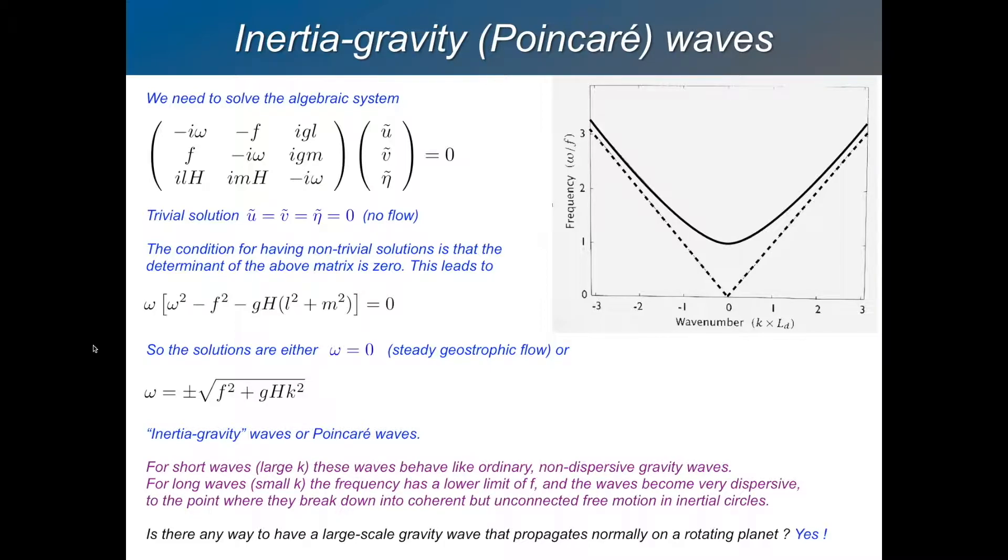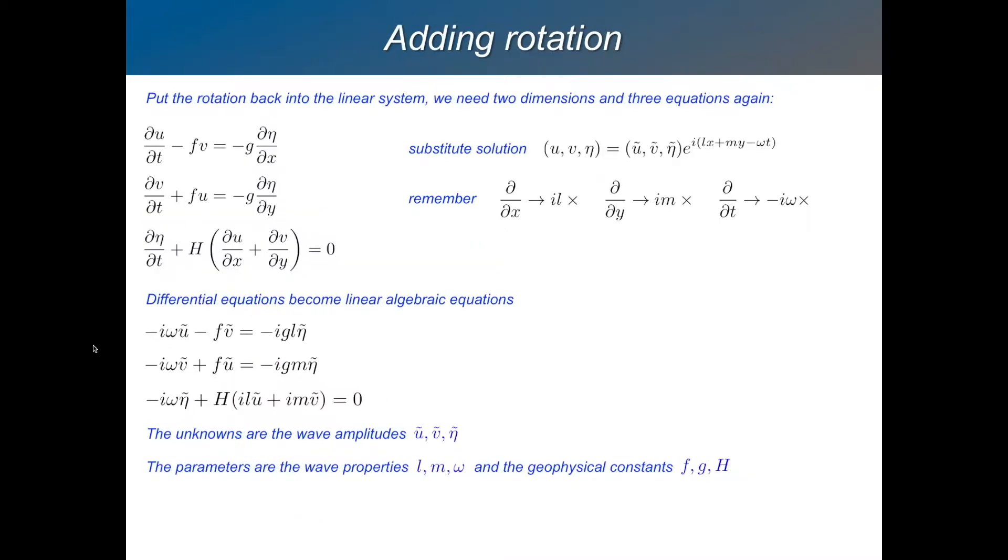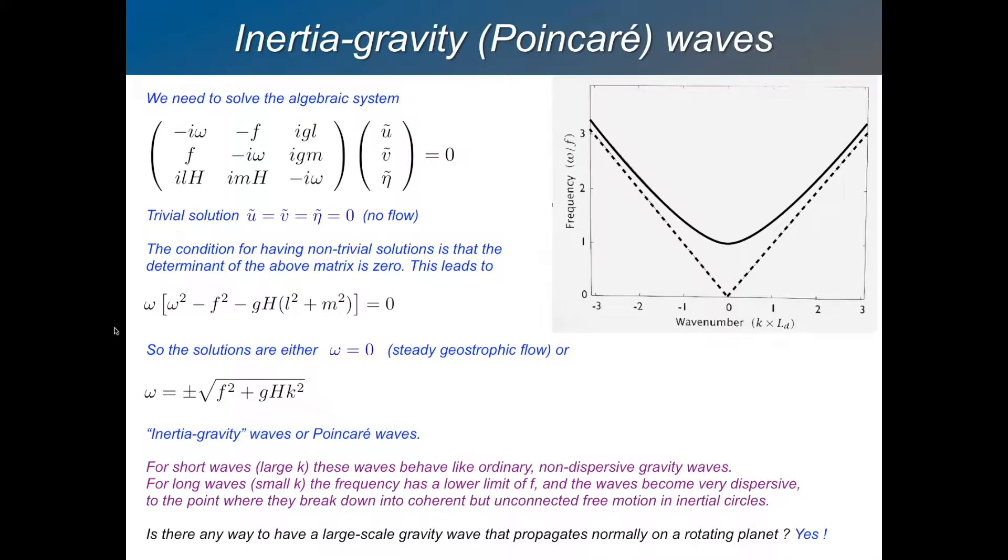It corresponds to geostrophic balance. So it's like if we crossed out the d by dt terms in these equations, what you'd have there is geostrophic balance. You wouldn't necessarily have zero structure. You'd have a sloping surface. And which would have motion associated with it, but it would be a standing wave. So omega equals zero there, this geostrophic balance.